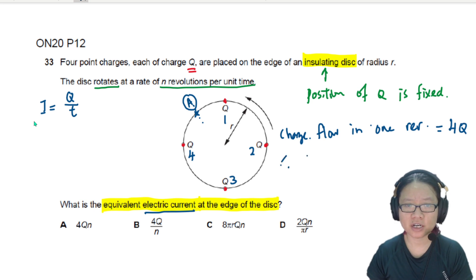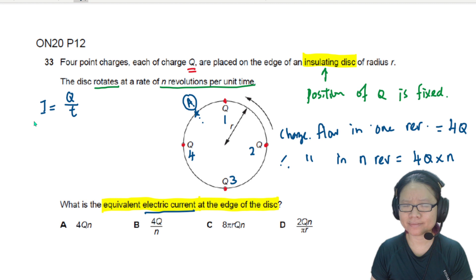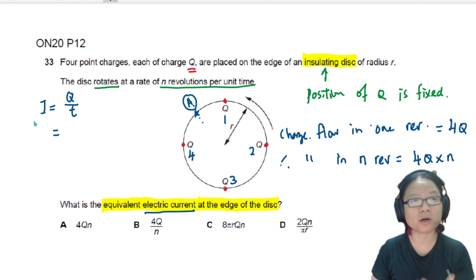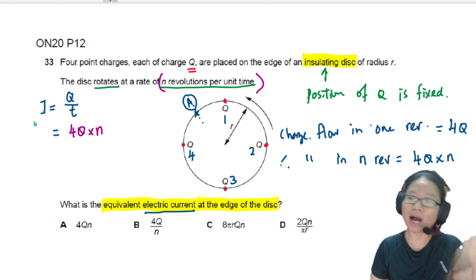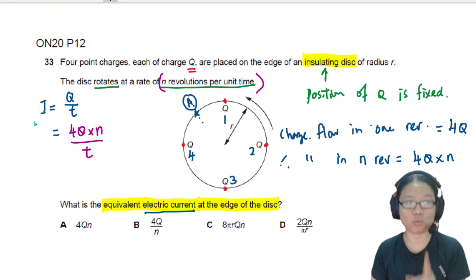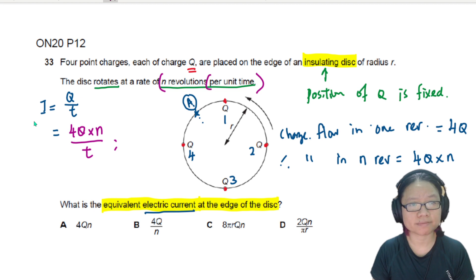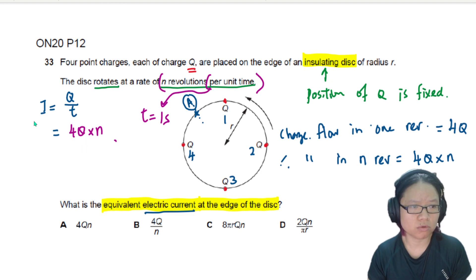So hence, the charge flow in N revolutions will be equal to 4Q times N. Since current is charge flow per unit time, and you have N revolutions per unit time, the total charge will be 4Q multiplied by N. And how long did it take? The unit time is 1 second. So in 1 second, you turn N times. You can substitute 1, and the answer is 4QN.